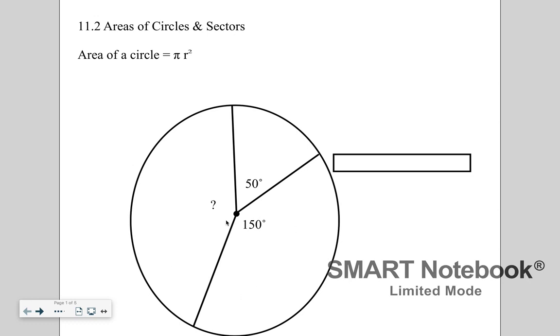Just a reminder about finding central angles, the circle has 360 degrees. So if we needed to find this particular angle, you would just take 360, subtract 50 and 150. So that means this question mark angle is 200 degrees.